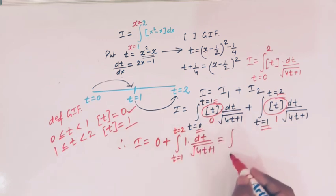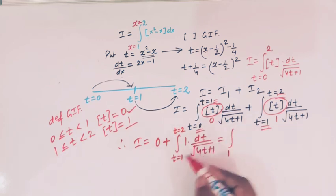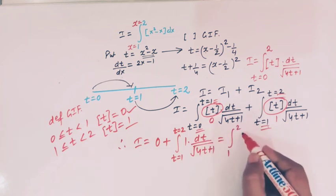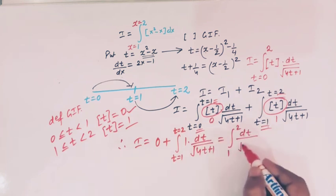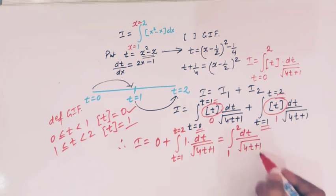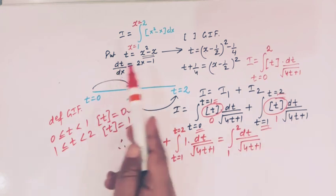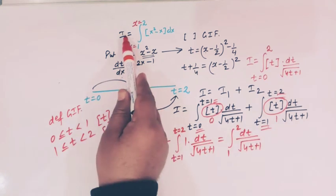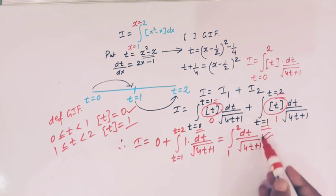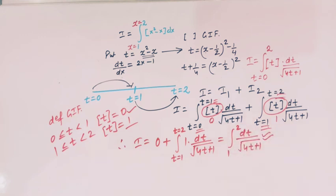Therefore I reduces to the integral from 1 to 2 of dt over square root of (4t plus 1). We have successfully simplified the original integral to this standard form, and we will evaluate it using another substitution.